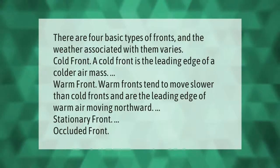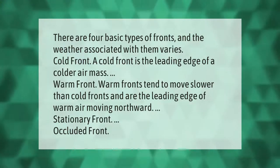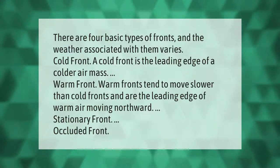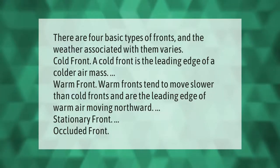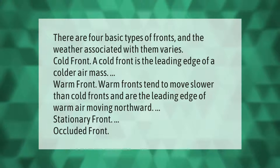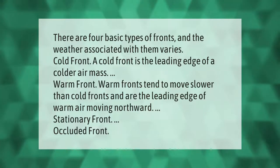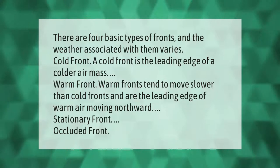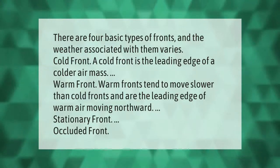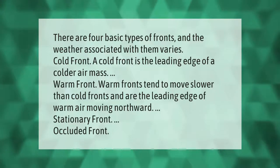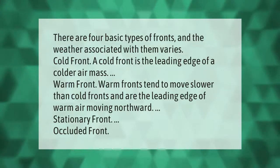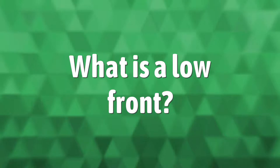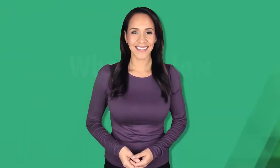There are four basic types of fronts and the weather associated with them varies. A cold front is the leading edge of a colder air mass. Warm fronts tend to move slower than cold fronts and are the leading edge of warm air moving northward. The four types are: cold front, warm front, stationary front, and occluded front.